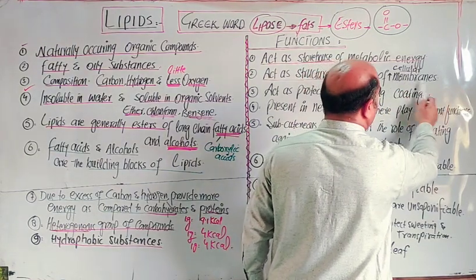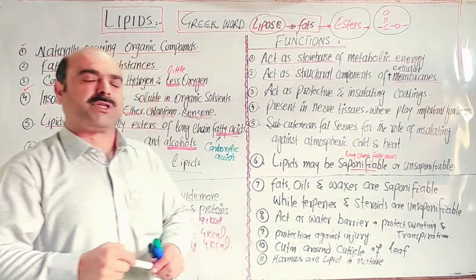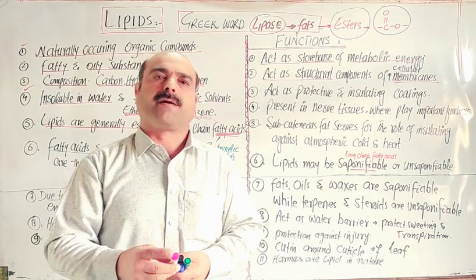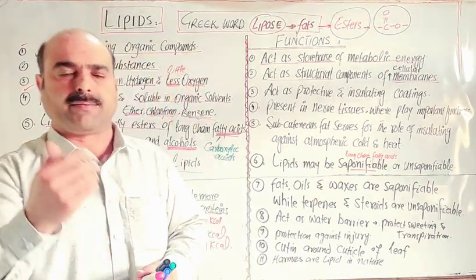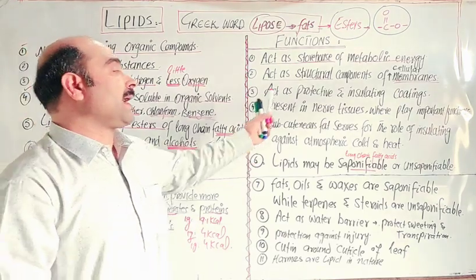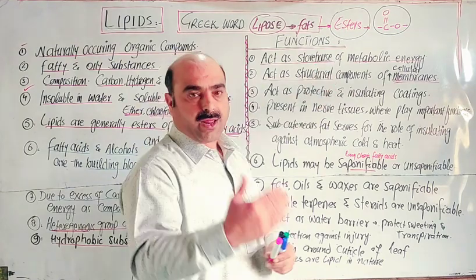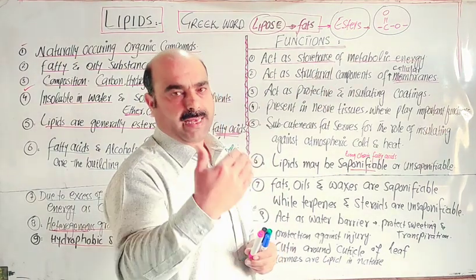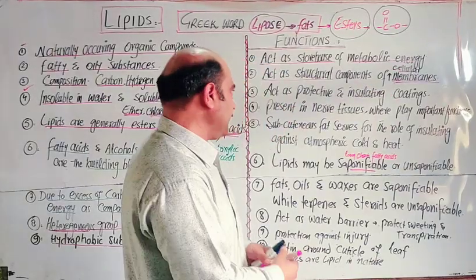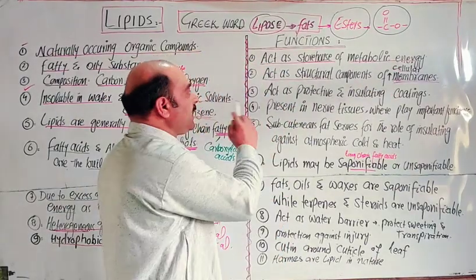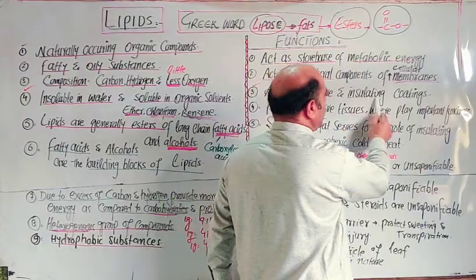Second function: lipids are a structural component of cellular membranes. The plasma membrane and cell membrane contain lipids as key structural materials, playing a critical role in the formation and maintenance of the cell membrane structure.